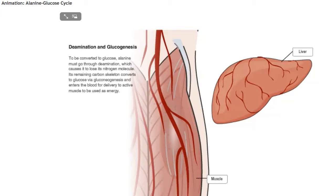After 4 hours of continuous light exercise, the liver's output of alanine-derived glucose accounts for nearly 45% of the liver's total glucose release.